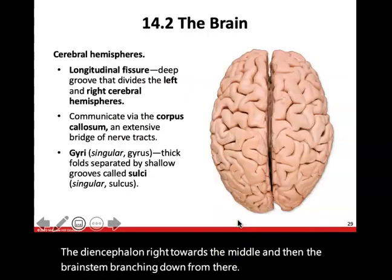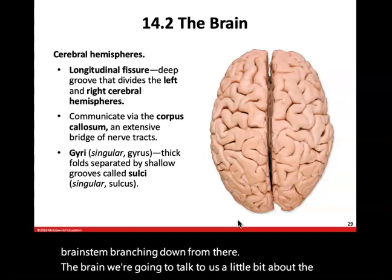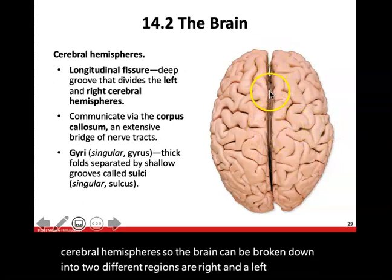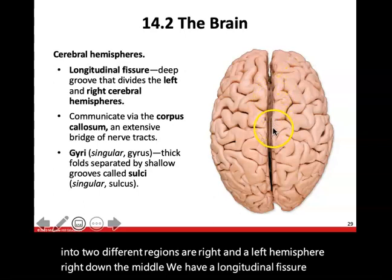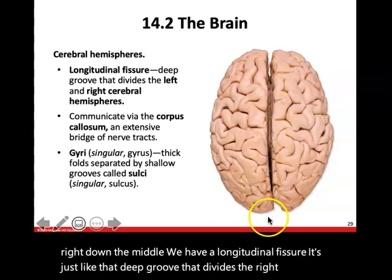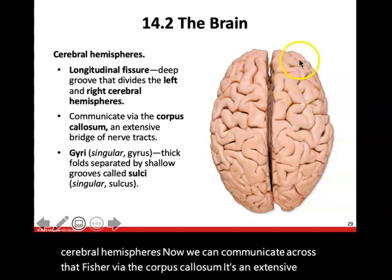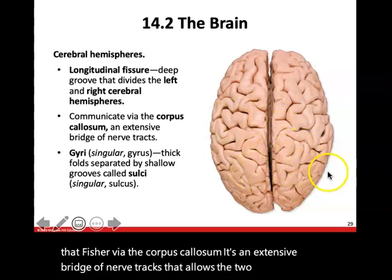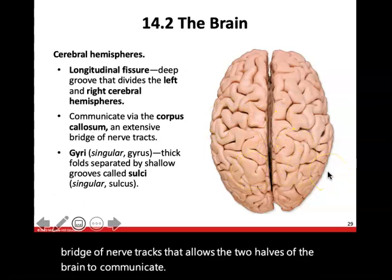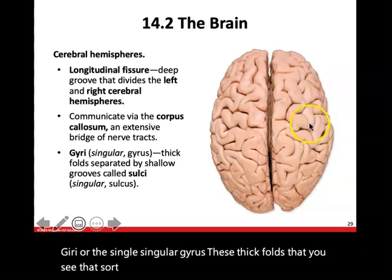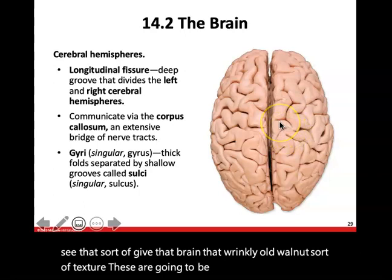The brain can be broken down into two regions: a right and a left hemisphere. Right down the middle, we have a longitudinal fissure — a deep groove that divides the right and left cerebral hemispheres. We can communicate across that fissure via the corpus callosum, an extensive bridge of nerve tracts that allows the two halves of the brain to communicate. Gyri — the singular is gyrus — are the thick folds that give the brain that wrinkly, walnut-like texture, separated by shallow grooves called sulci.